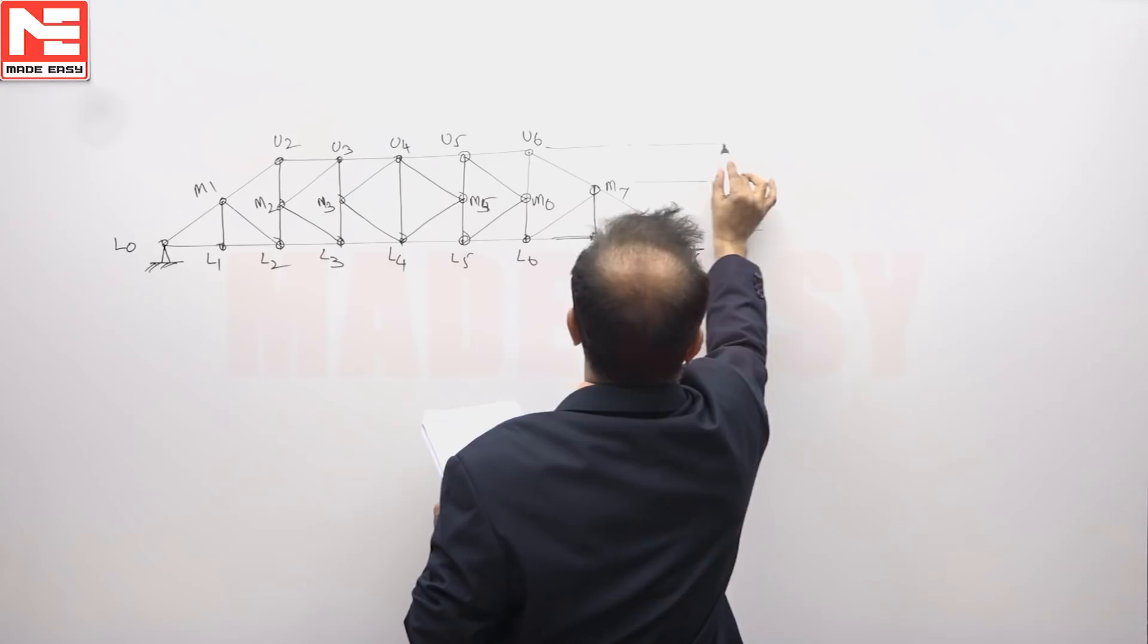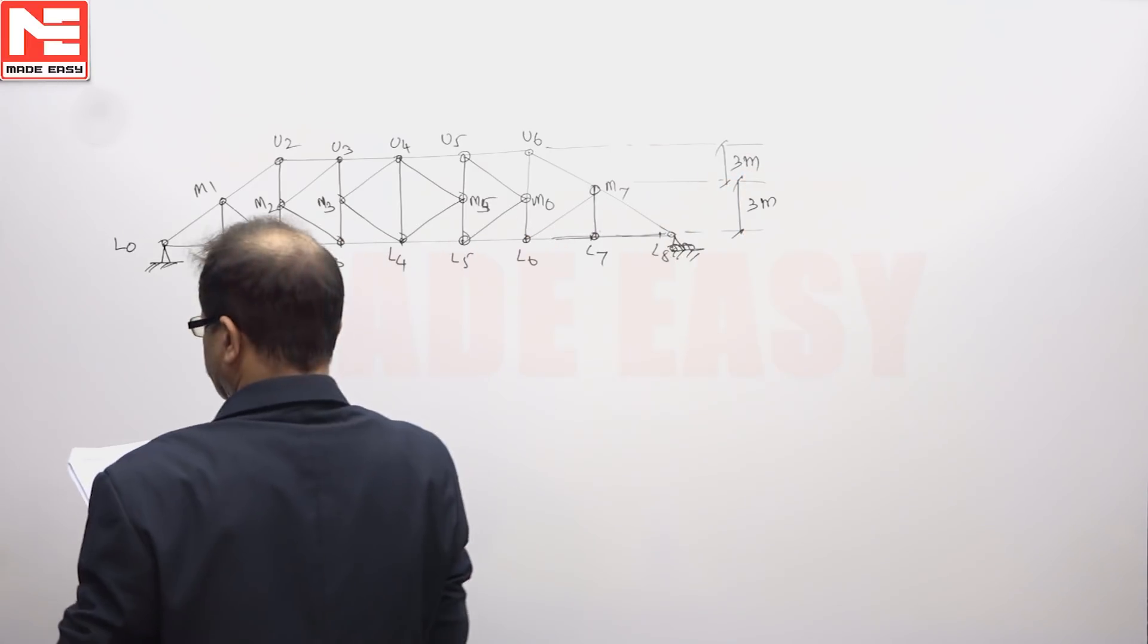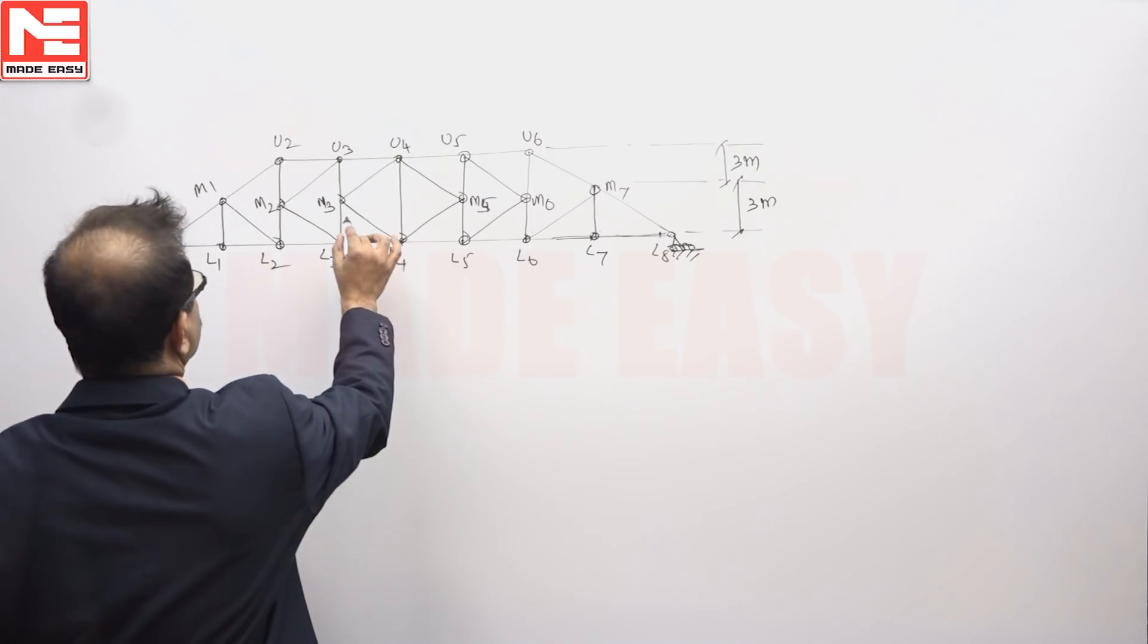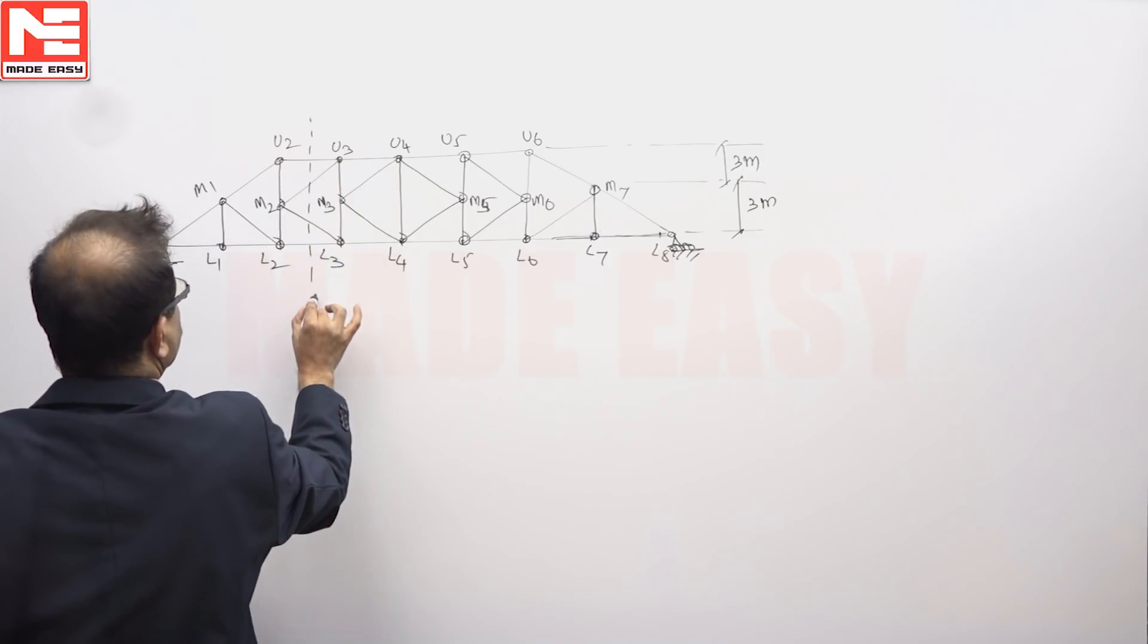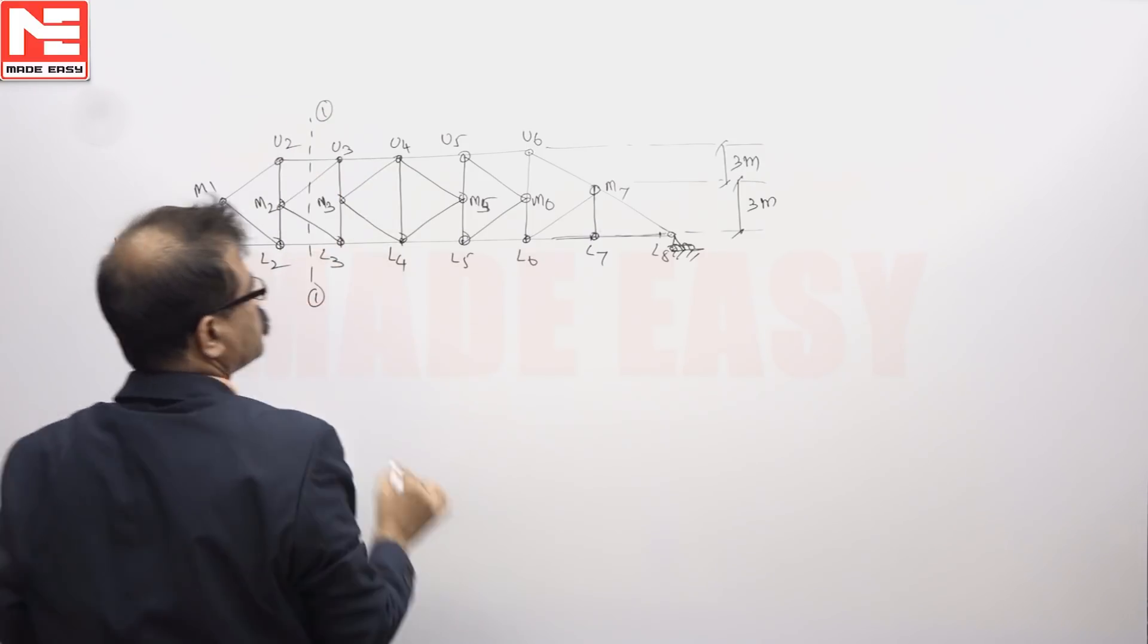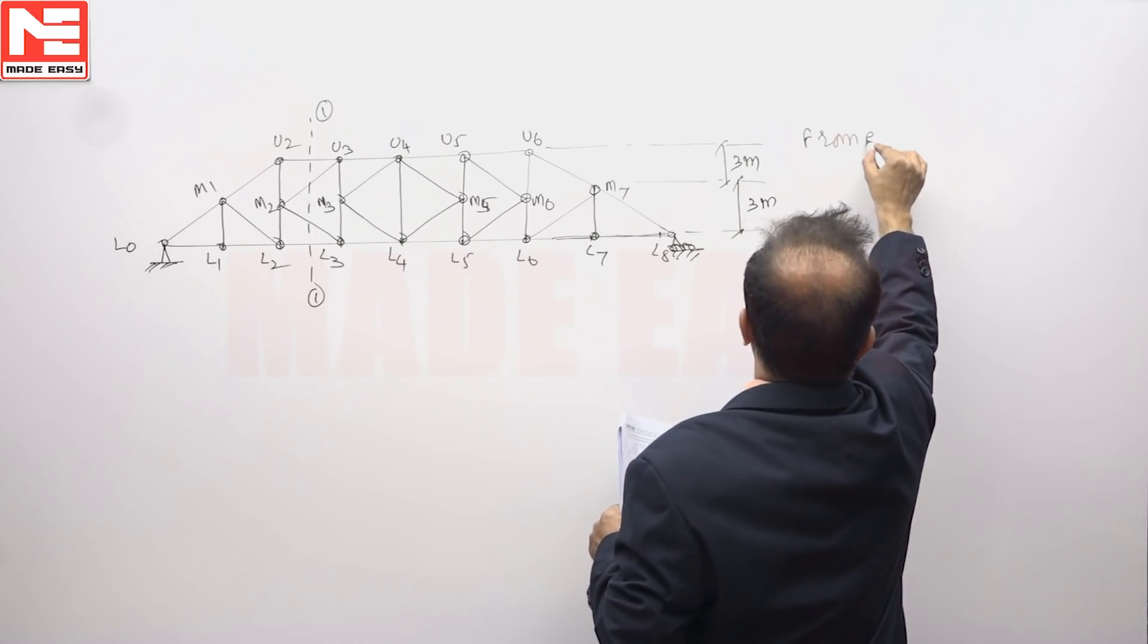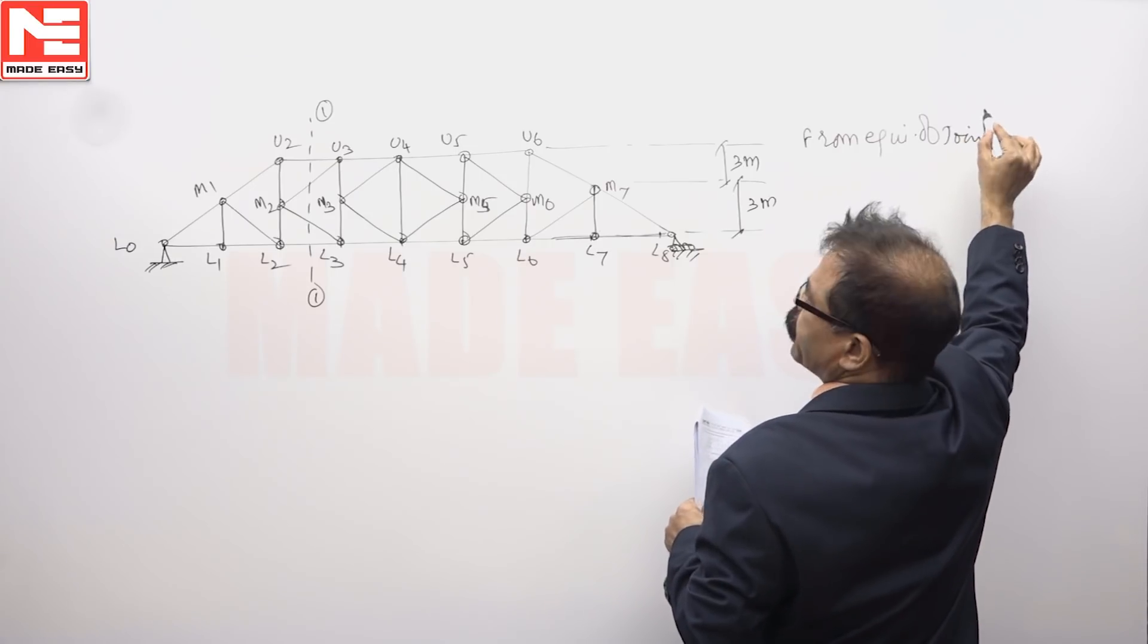This side is 3 meters, total is 6 meters. We want FM2 U3. We will cut it by 1-1. First, you have to see from equilibrium of joint 2, joint M2.